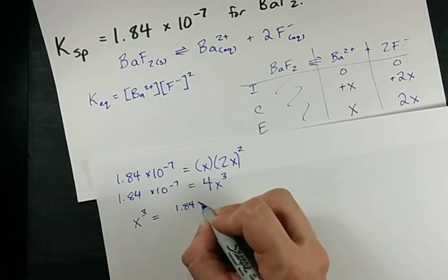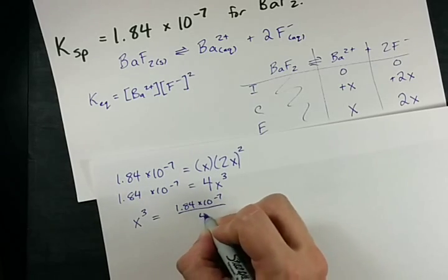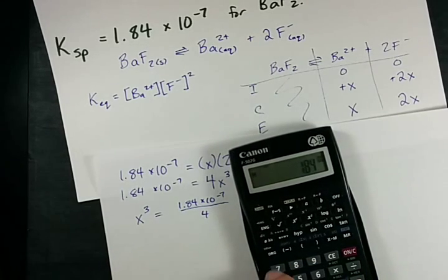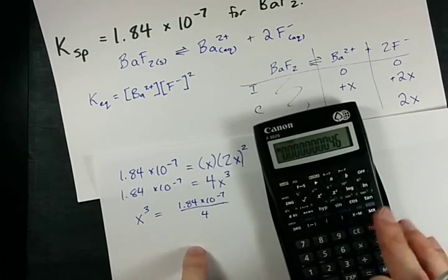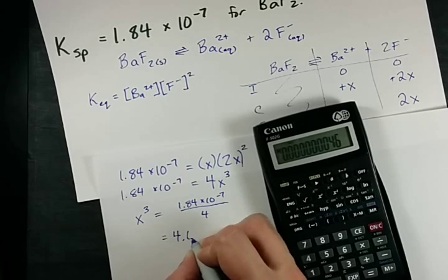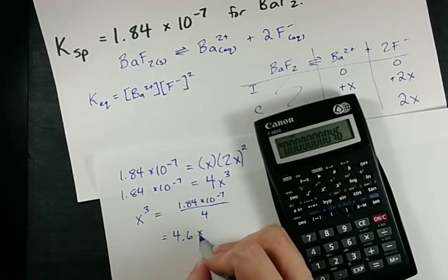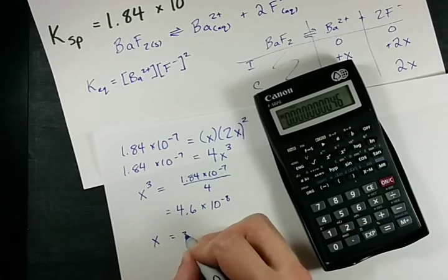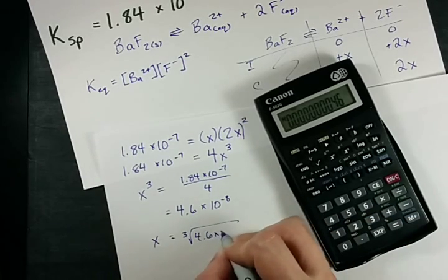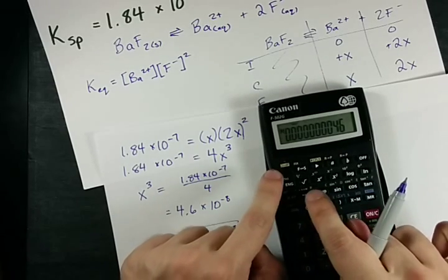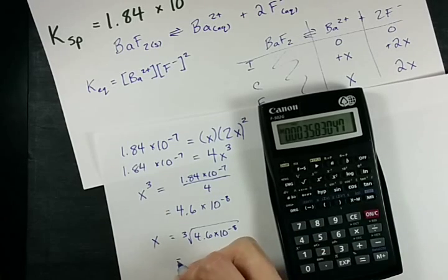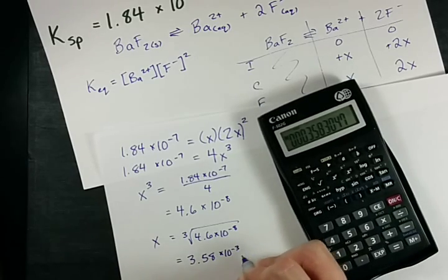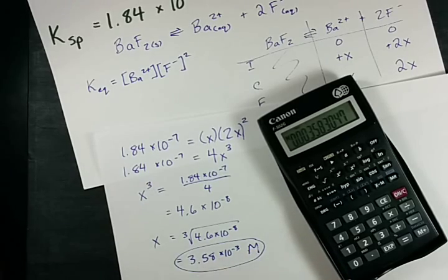So I'm going to rearrange this. x cubed is 1.84 times 10 to the negative 7. I'm going to divide both sides by 4. 1.84 times 10 to the negative 7 divided by 4 gives me 4.6 times 10 to the minus 8. And now to undo the cube, I need to do the cube root. Cube root, which gives me an x of 3.58 times 10 to the negative 3. And that's my solubility in moles per liter.